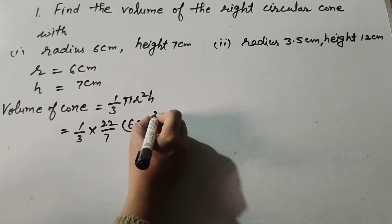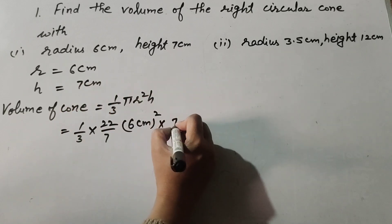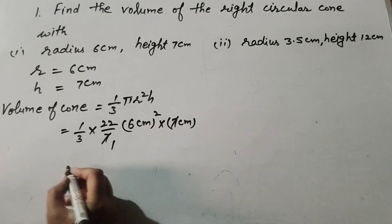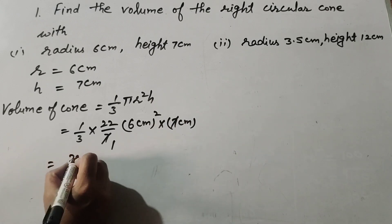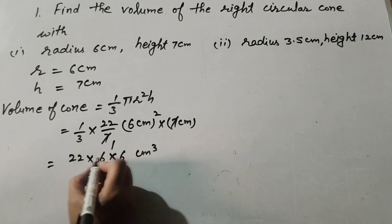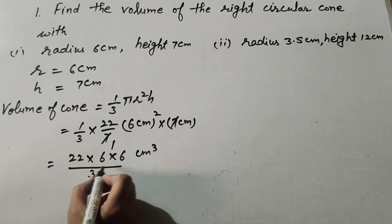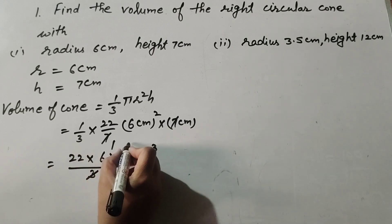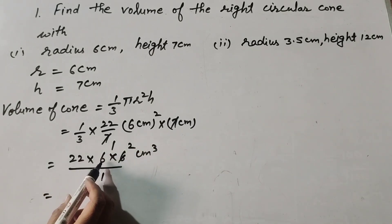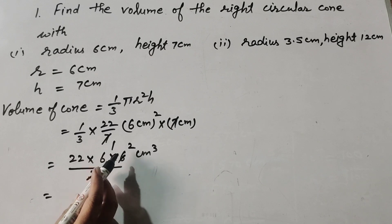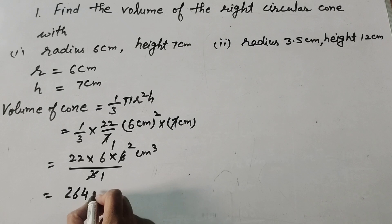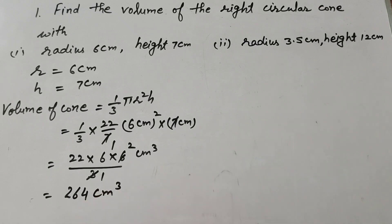Substituting r = 6 cm and h = 7 cm: the 7 in the denominator and the 7 from height cancel. We get 22 × 6 × 6 / 3. Since 3 and 6 are divisible by 3, we cancel them: 22 × 6 = 132, and 132 × 2 = 264 centimeter cube.